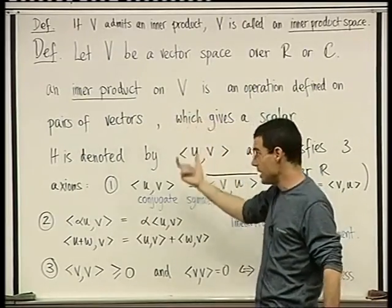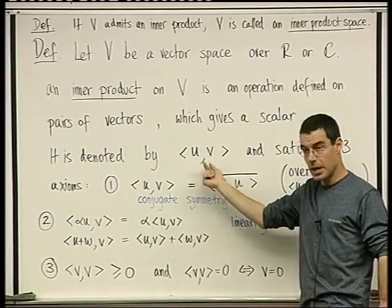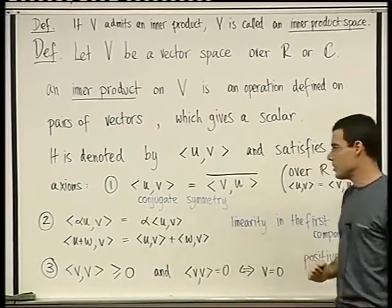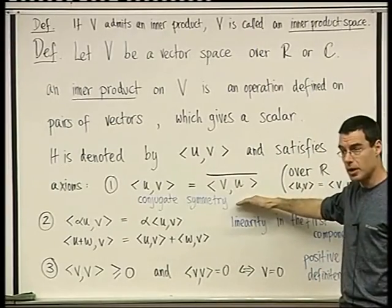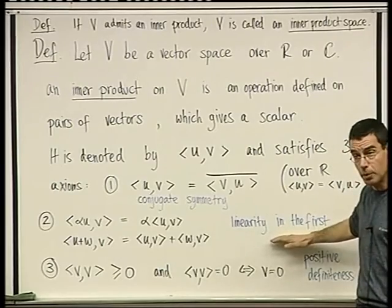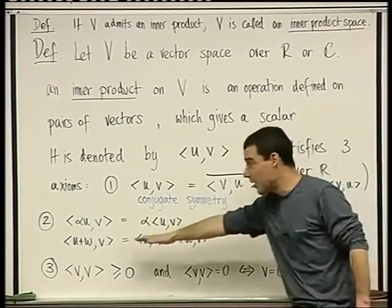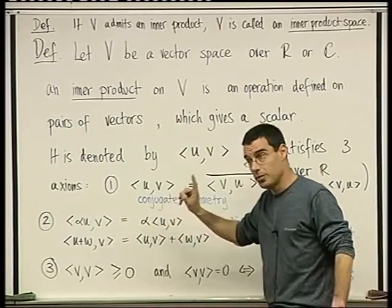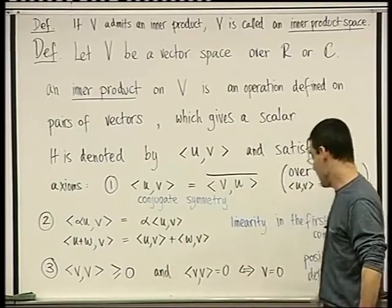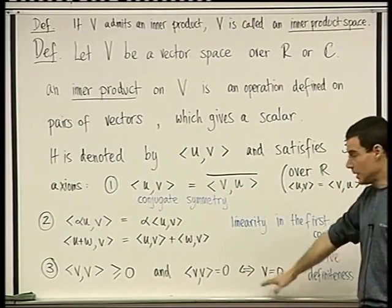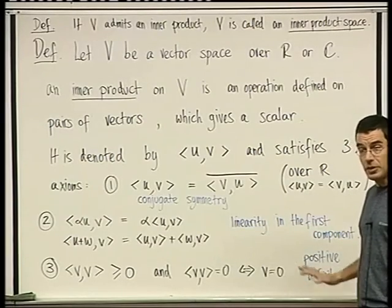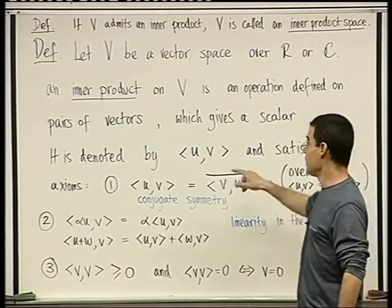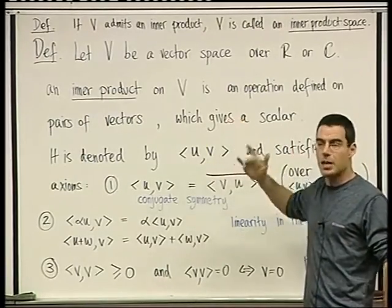An inner product takes in two vectors and produces a scalar, and satisfies three axioms: symmetry, or conjugate symmetry over the complex numbers; linearity in the first component, which translates into linearity in the second component, except for alpha coming out with a bar if we're over the complex numbers from the second component; and this positive definiteness property, property number three. We've seen examples. For matrices, for example, the inner product of A and B is the trace of AB transpose.